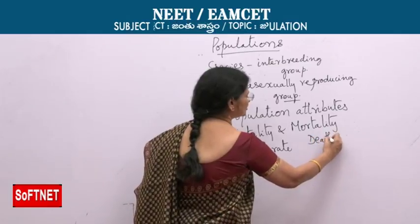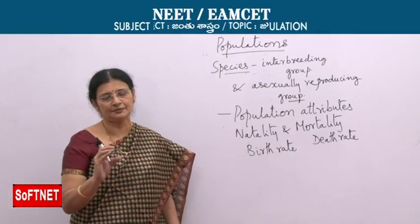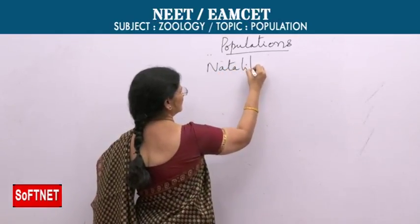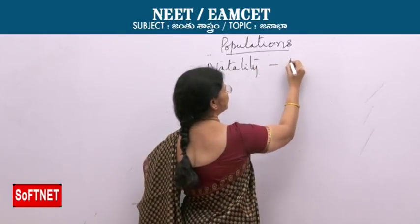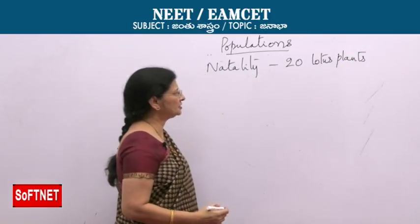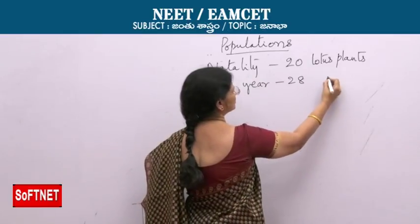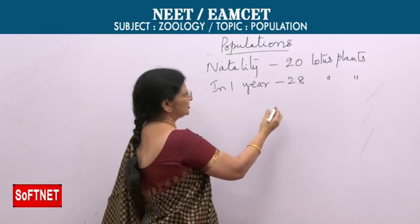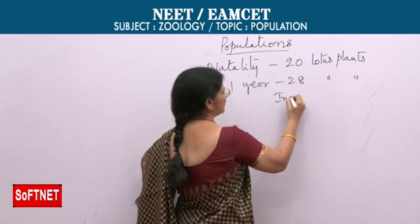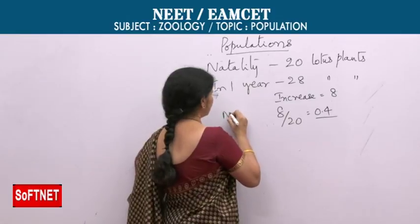Here we are talking about the entire group living at that particular place, so we talk about the birth rate of the population in a unit time. For example, suppose in a pond there are 20 lotus plants. In one year they increase to 28. The increase in number, the birth rate, is 8. So 8 divided by 20, that is 0.4, is considered the natality or birth rate.